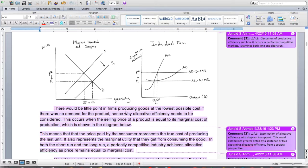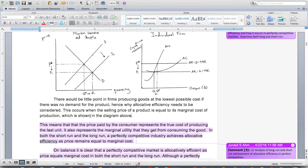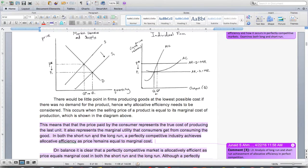There would be little point in firms producing goods at the lowest possible cost if there was no demand for the product, so this is a new point of analysis. Hence why allocative efficiency needs to be considered. This occurs when the selling price of a product is equal to its marginal cost of production, which is shown in the diagram above. This means that the price paid by the consumer represents the true cost of producing the last unit and also represents the marginal utility that consumers get. In both the short run and long run, a perfectly competitive industry achieves allocative efficiency as price remains equal to marginal cost. We can see that price is equal to marginal cost because price is equal to marginal revenue in this situation.